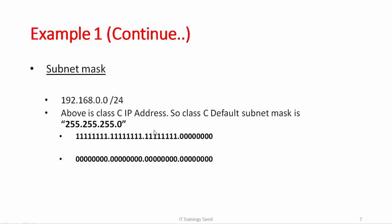I already explained that Class A has one network and three host octets. In Class B, two networks and two hosts. Class C has three networks and one host octet — that's it: one, two, three. Three networks and one host. So by default /24, and 8+8+8 equals 24. The first octet values are 1, 2, 4, 8, 16, 32, 64, 128 — if you have all ones you will have 255. So this is the default subnet mask for Class C.